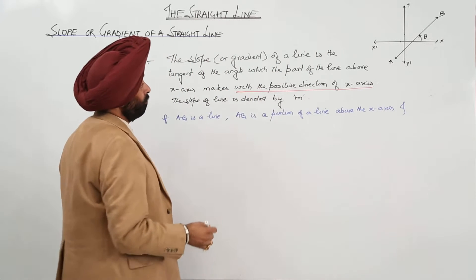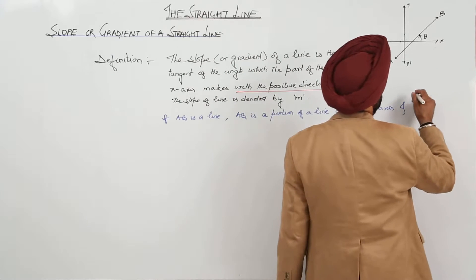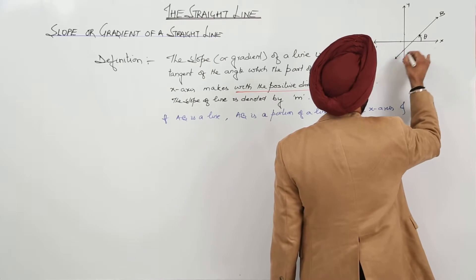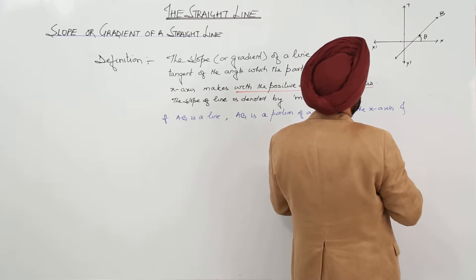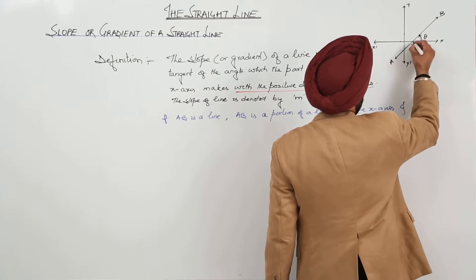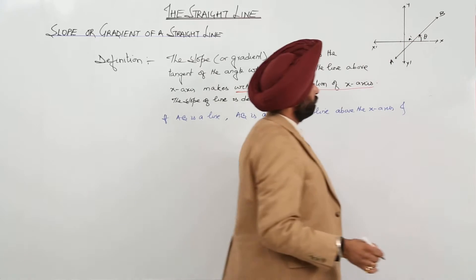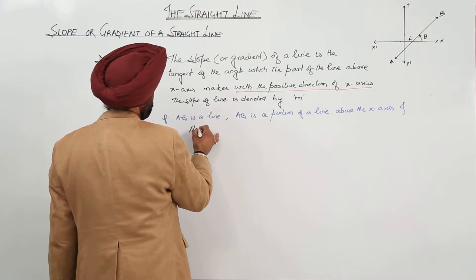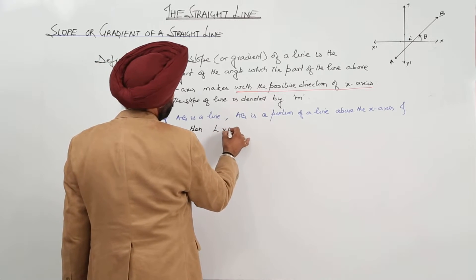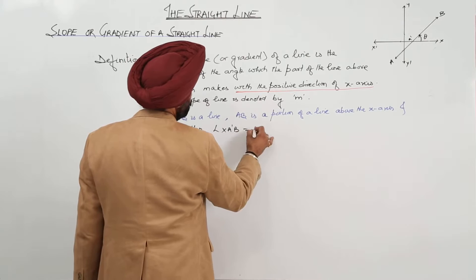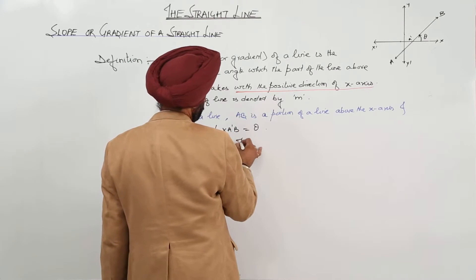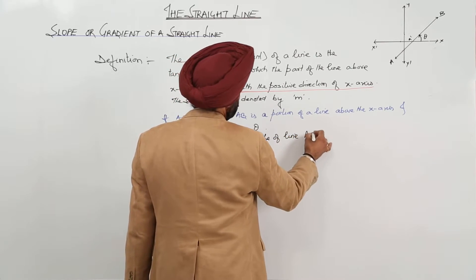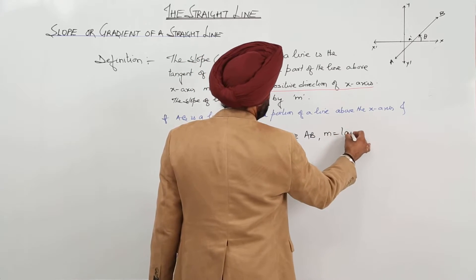And in this part, we are having, suppose the point is, let this point be A dash. AB is a portion of a line above the x-axis, then angle XA'B is equal to theta. The slope of line AB, m is equal to tan theta.